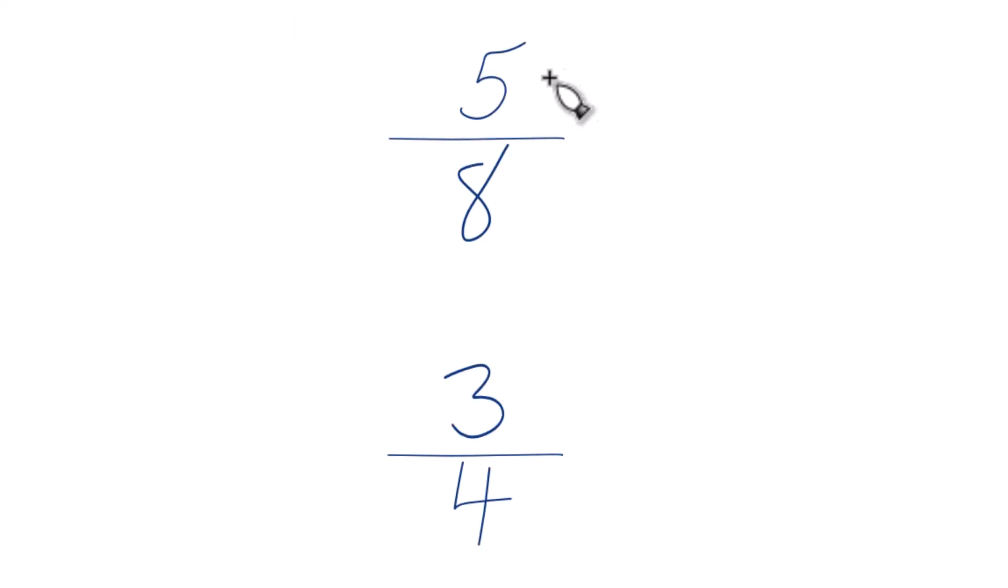Let's take a look at which one of these fractions, 5/8 or 3/4, is larger. So you could just divide 5 by 8 on your calculator and then compare that to 3 divided by 4 on your calculator. You get two decimals. Whichever one's larger, that's the greater fraction.